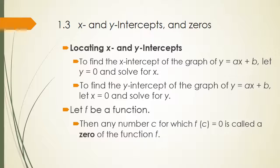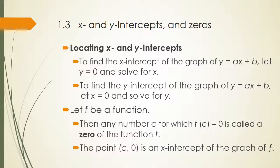Let f be a function. Any number c for which f of c equals zero is called a zero of the function. In other words, any x-value that gives you a zero y-value is called a zero. The point (c, 0) is an x-intercept for the graph, as well as being the zero.